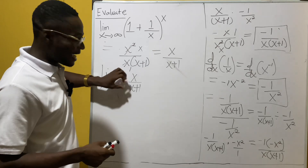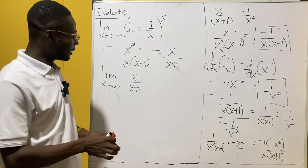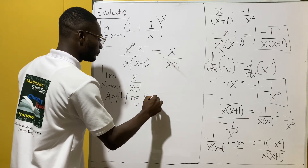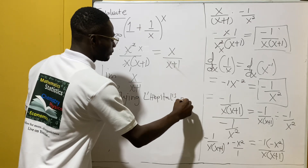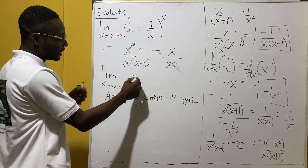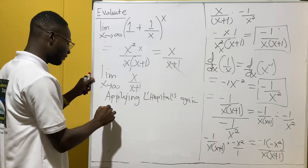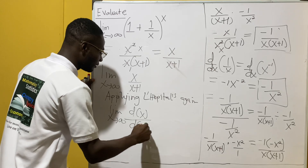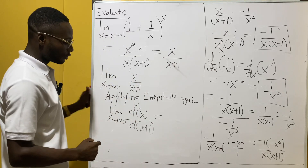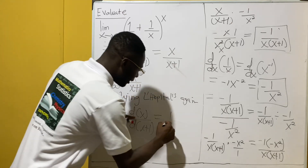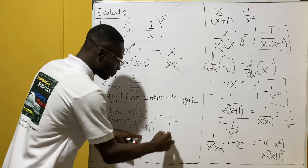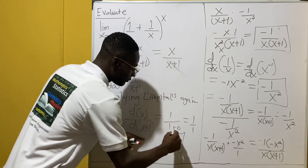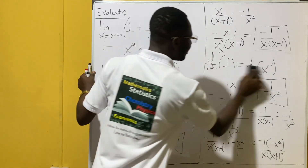We can go ahead and apply L'Hôpital's rule a second time. Applying L'Hôpital's rule again, we differentiate the numerator and denominator of x/(x+1). The differential of x is 1, and the differential of (x+1) gives us 1, with the constant 1 giving zero. So we have 1 over 1, which equals 1.